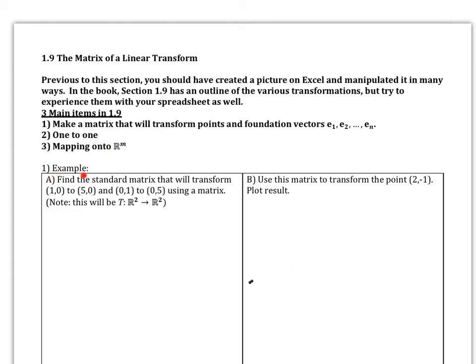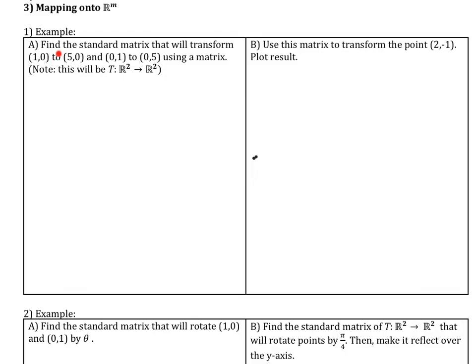Let's start with an example about the standard matrix. The standard matrix is the matrix that will rotate us or manipulate us however we want. Example number one: find the standard matrix that will transform (1,0) to (5,0) and (0,1) to (0,5) using a matrix. If you notice, we just magnified each one of these by 5, so we're going to be expanding.